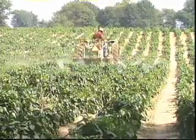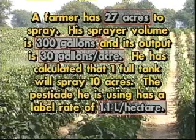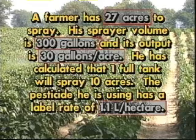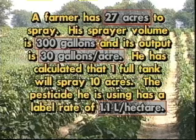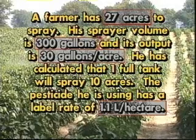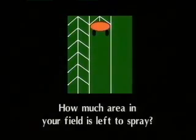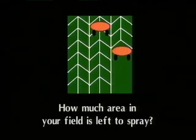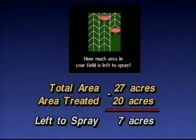Let's take a look at an example. A farmer has 27 acres to spray. His sprayer volume is 300 gallons and its output is 30 gallons per acre. He has calculated that one full tank will spray 10 acres. He has already sprayed 20 acres of his 27-acre field using two full tanks. By subtracting the area treated — 20 acres — from the total area of 27 acres, he finds out he has 7 acres left to spray.